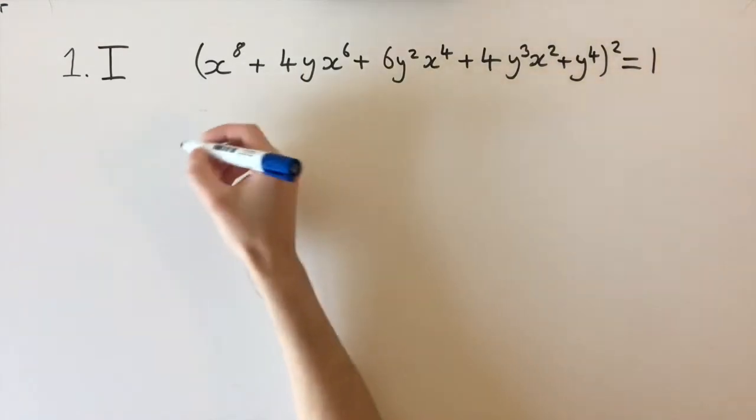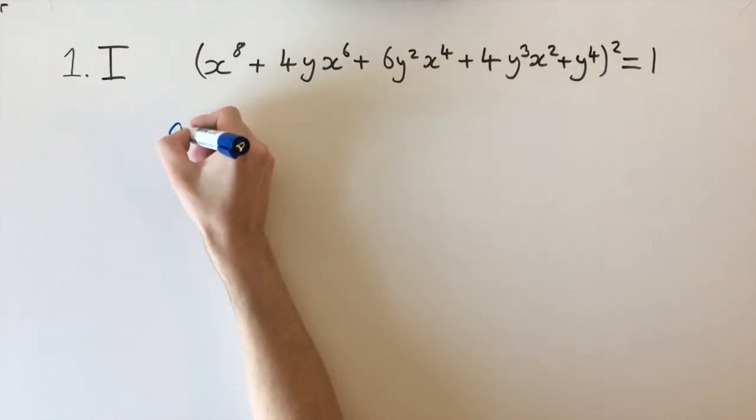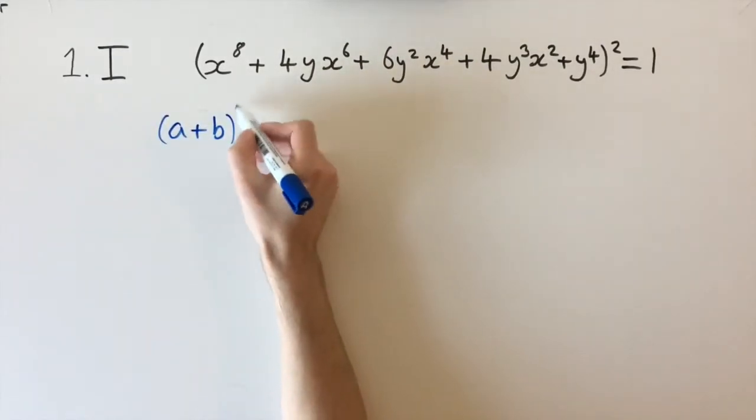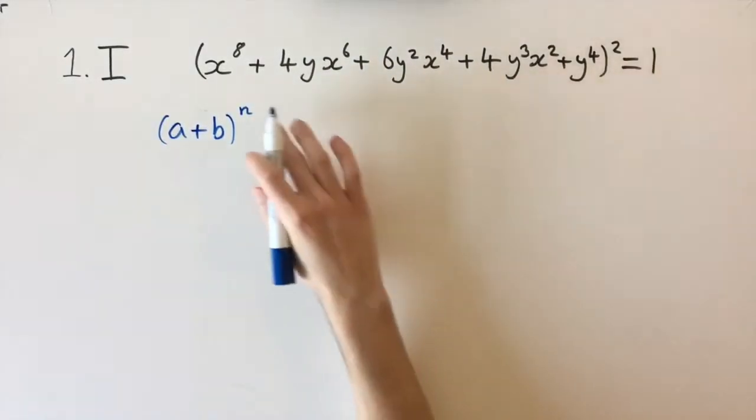What we want to be looking at is the binomial expansion for two terms, (a + b) to the power of n for some n.